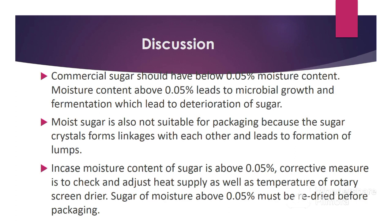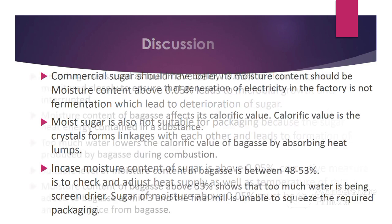Sugar should have below 0.05 percent moisture content. Moisture content above 0.05 percent leads to the growth of microorganisms like yeast and molds, which feed on sugar and produce alcohol as a byproduct, thus deteriorating the quality of sugar. Moist sugar is also not suitable for packaging because the sugar crystals form linkages with each other, leading to the formation of lumps. If the moisture content of sugar is above 0.05 percent, the corrective measure is to check and adjust the heat supply and temperature of the rotary dryer. Sugar with moisture above 0.05 percent must be redried before packaging.